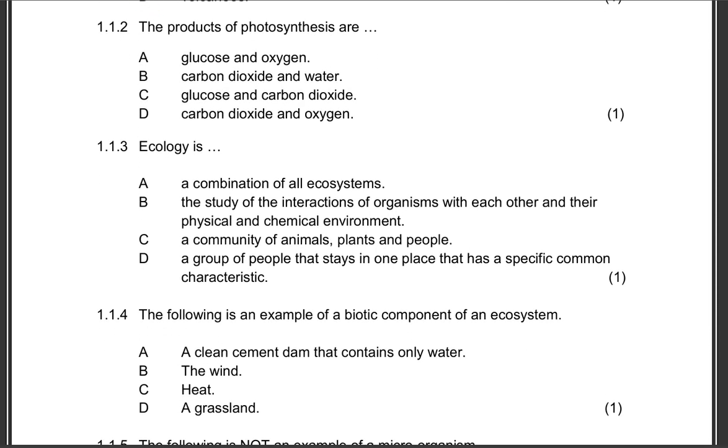Question 1.1.2: The products of photosynthesis are - is it glucose and oxygen, carbon dioxide and water, glucose and carbon dioxide, or carbon dioxide and oxygen? The correct answer is obviously A. The products of photosynthesis is glucose, which is the sugar that is produced, and oxygen that is the byproduct. These two are requirements, so the correct answer is A.